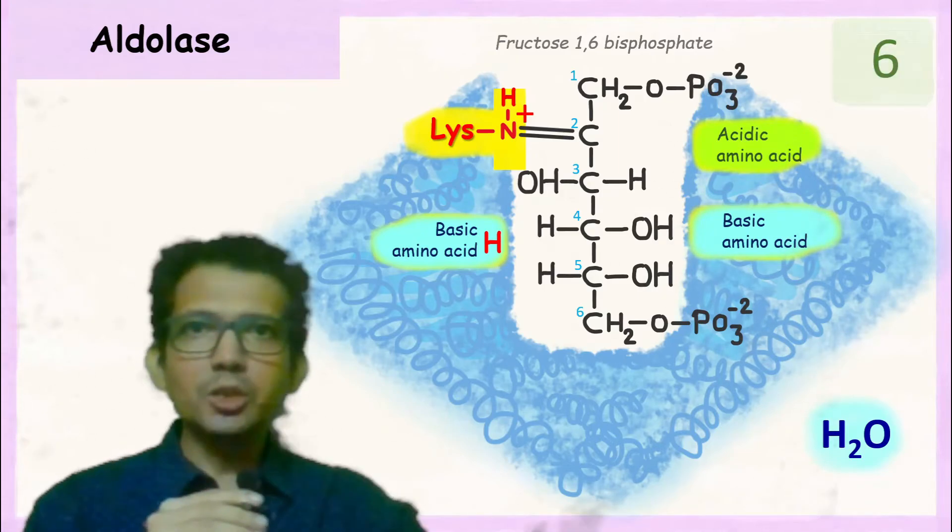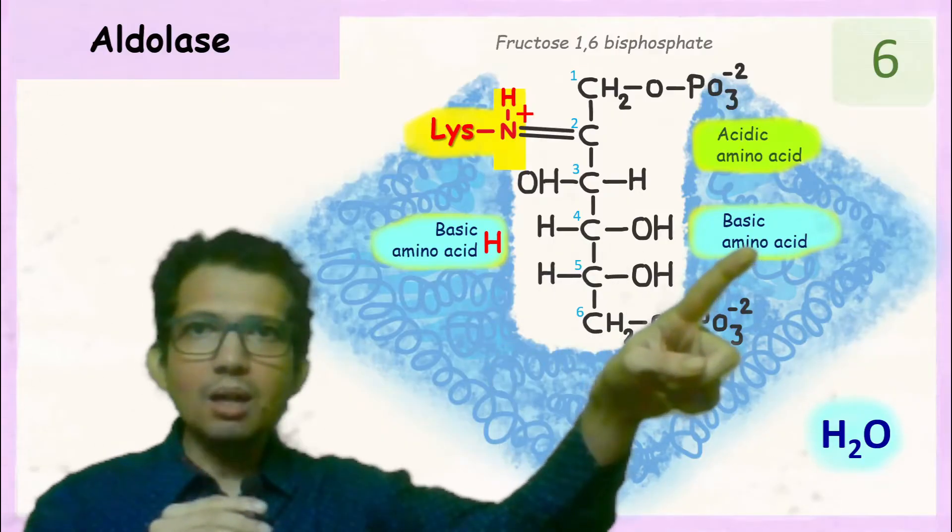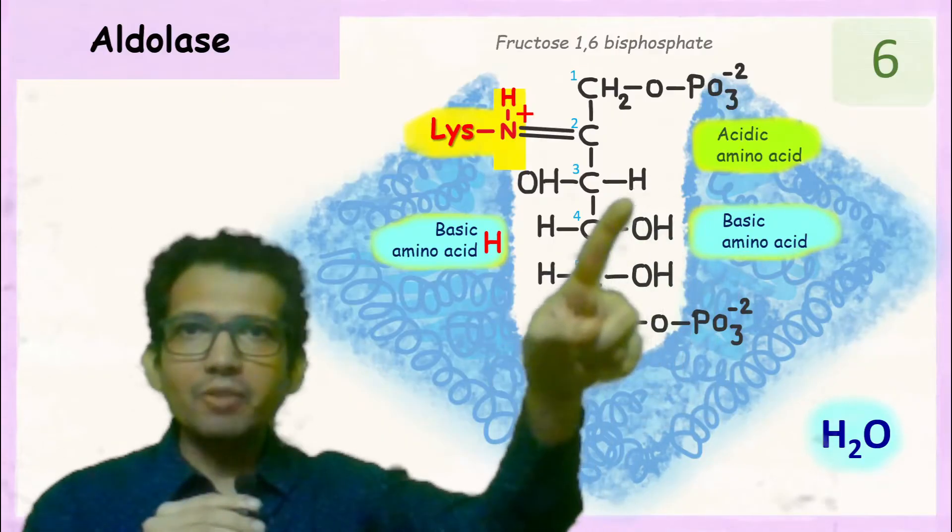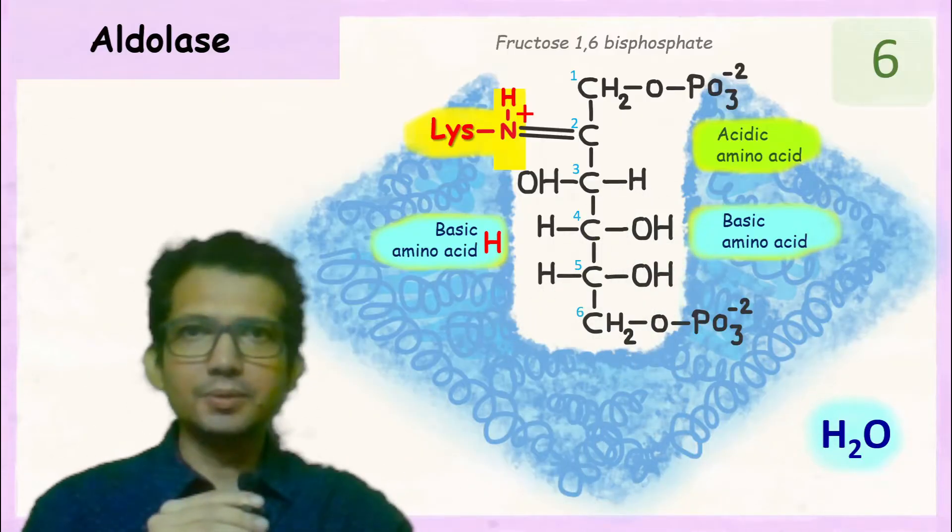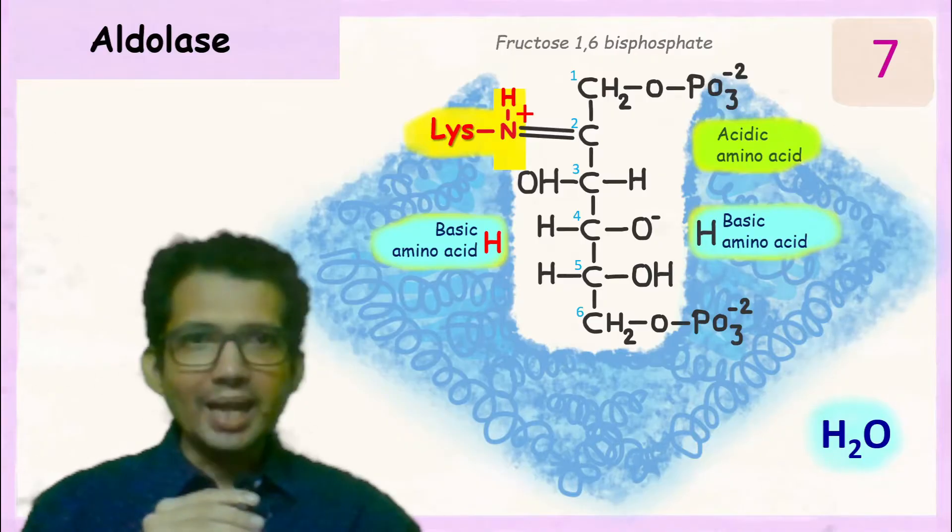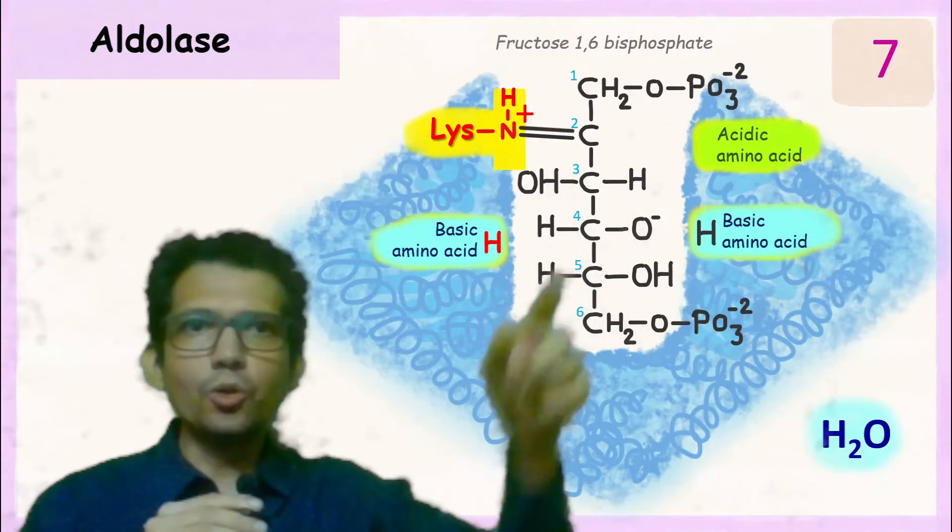Now pay attention to C4 carbon atom. This basic amino acid takes away the hydrogen from this hydroxyl group. Then the enzyme breaks the bond between C3 and C4.